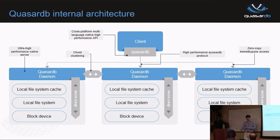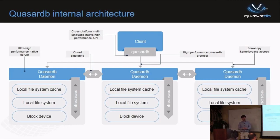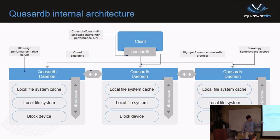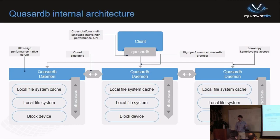We transparently shard the time series across time and do our best to have locality of different time series for a given time window. Every node does direct access to the block device and network card. Once you've decided that a node is responsible for your data, it doesn't need to communicate with the other nodes — unless you're doing a distributed transaction.